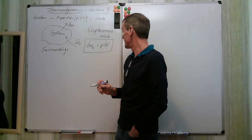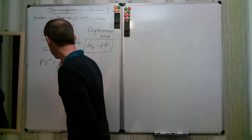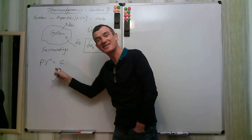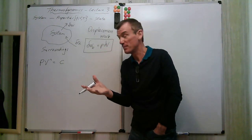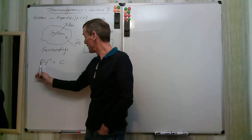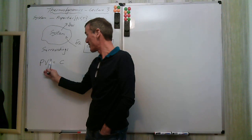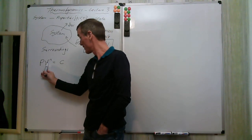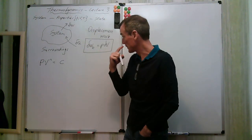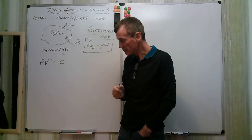We identified polytropic processes where PV^N = constant C. For N = 0, we get the isobaric process (P = constant). When N goes to infinity, we get V = constant, the isochoric process. For ideal gases with N = 1, it turns out to be an isothermal process. These are different curves and different paths on the PV diagram.